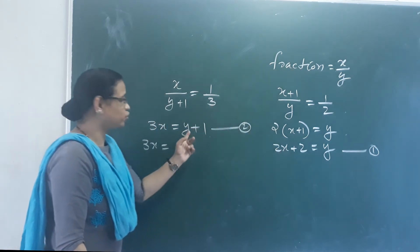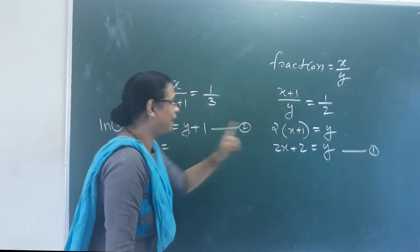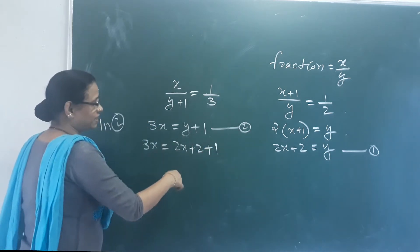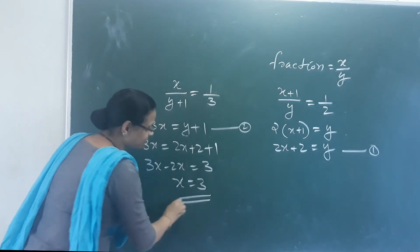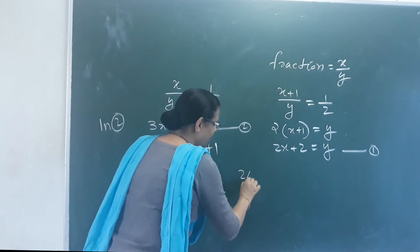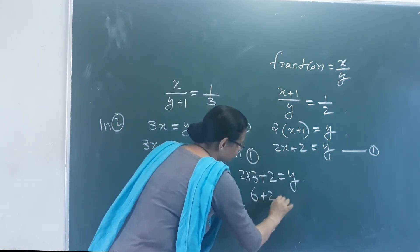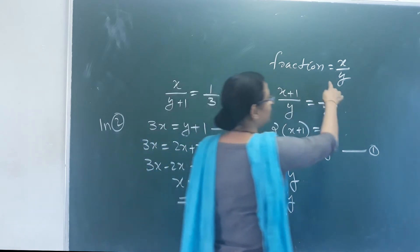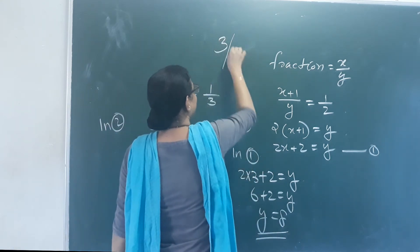Substituting Equation 1 into Equation 2: 3X minus 2X equals 3, so X equals 3. Then Y: using 2X plus 2, that's 6 plus 2, so Y equals 8. What is the fraction? X by Y — X is equal to 3 and Y is equal to 8. So the fraction is 3 by 8.